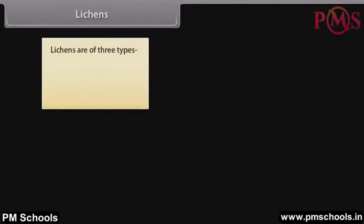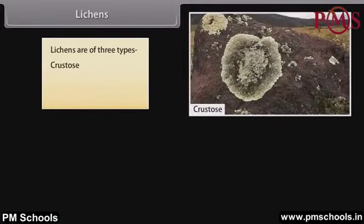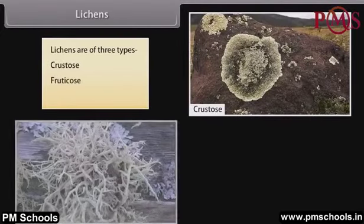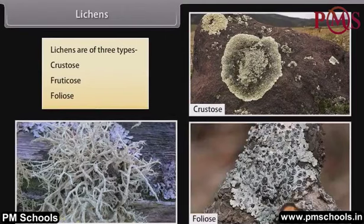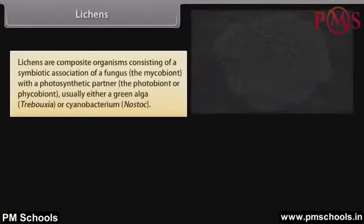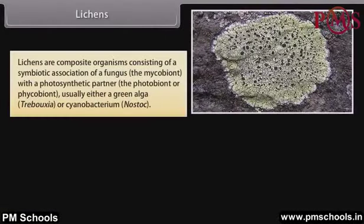Lichens are of three types. They are composite organisms consisting of a symbiotic association of a fungus — the mycobiont — with a photosynthetic partner, the photobiont or phycobiont, usually either a green algae (Trebouxia) or a cyanobacterium (Nostoc).